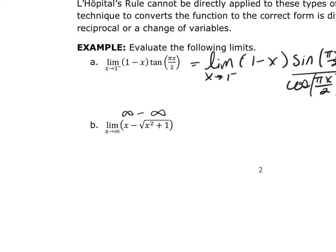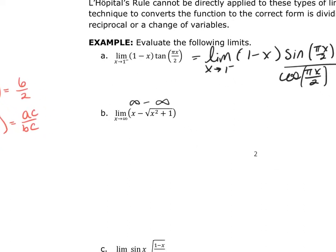I need to remind myself: if I have some number, say 3, and I multiply it by 2 over 2, I get 6 over 2, which is still 3. The rule is that if I have A over B and I multiply it by C over C, these are equivalent — I haven't changed anything. So I'm going to take the square root of x squared plus 1 and multiply the numerator and denominator by itself.